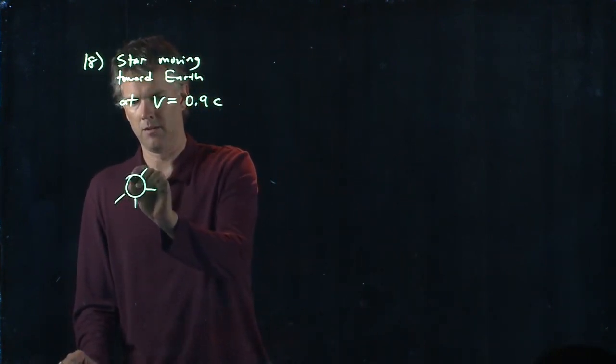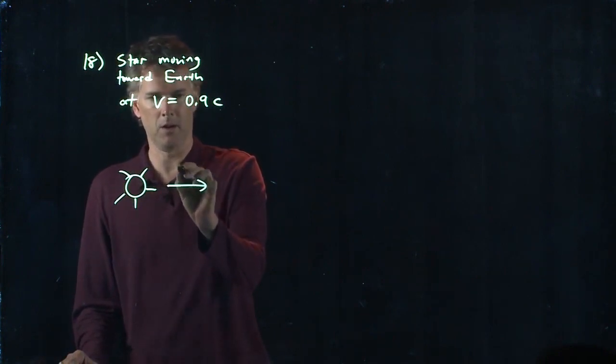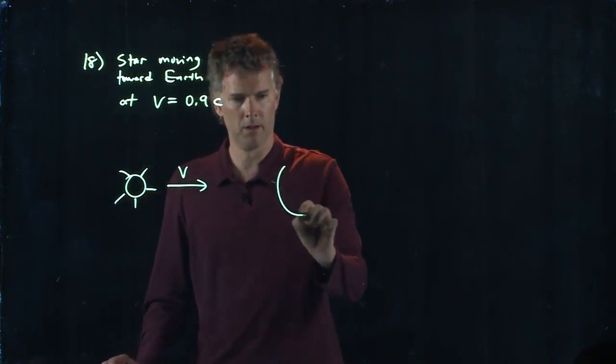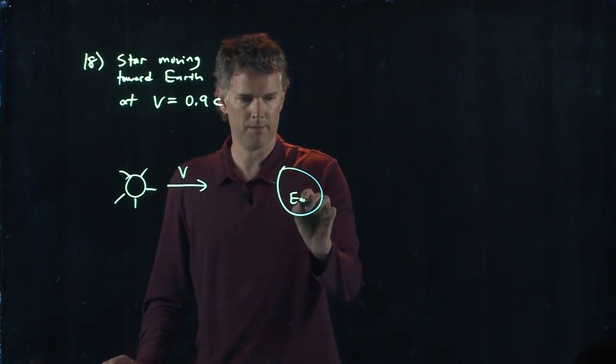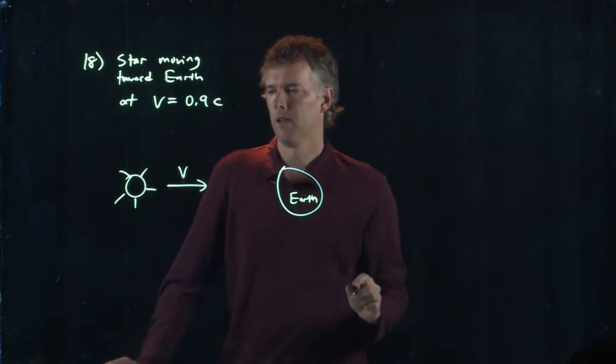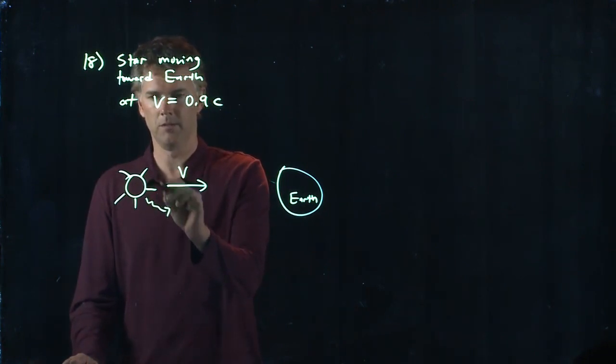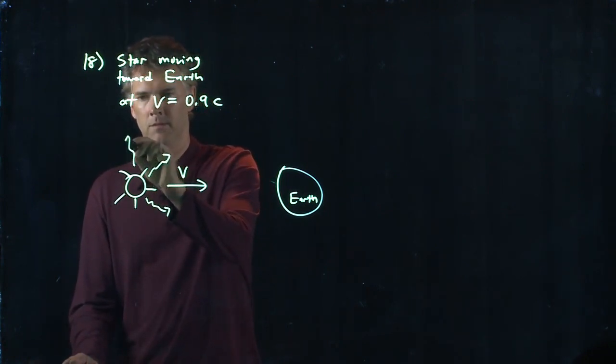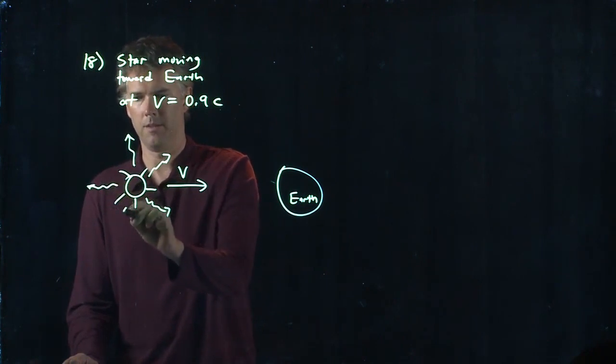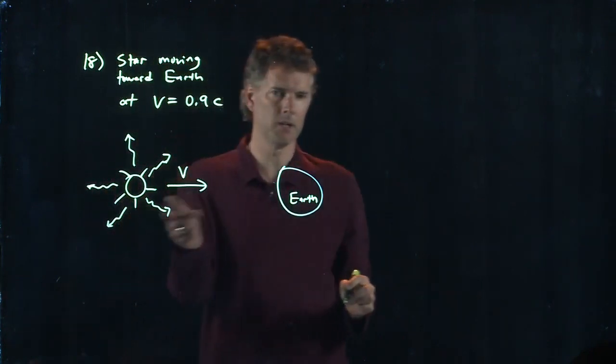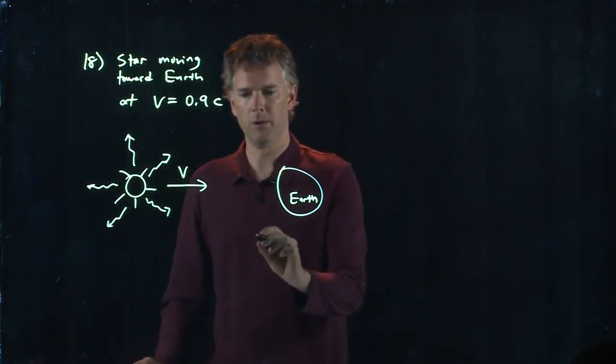So here's the star spitting out light in all directions, also moving toward us here on Earth. The star is moving at v, it's emitting light in all directions. If you're on Earth and you measure the speed of that light coming towards you, what do you measure?